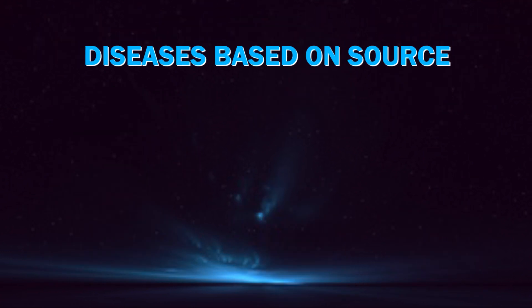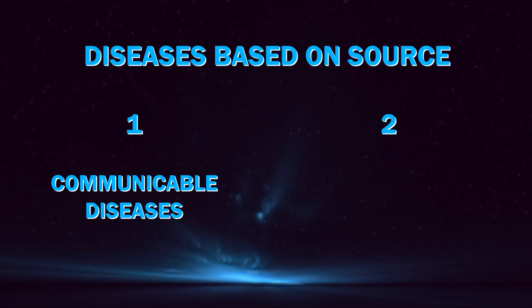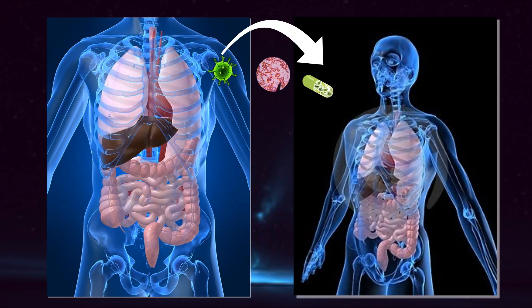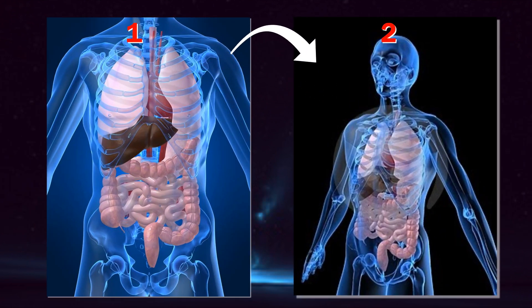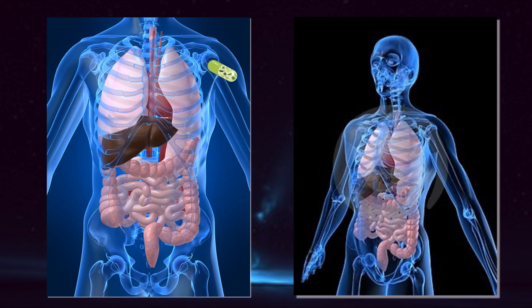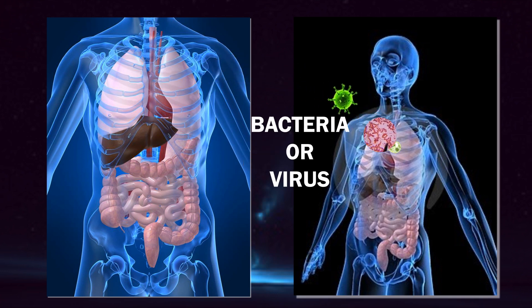Let's discuss types of diseases based on their source. There are two types of diseases that can affect a person: communicable diseases and non-communicable diseases. When a disease can transmit from one organism to another organism, it is called a communicable disease. The source of these diseases are microorganisms such as bacteria or viruses.